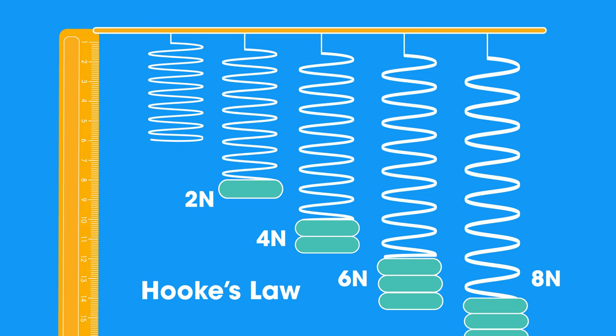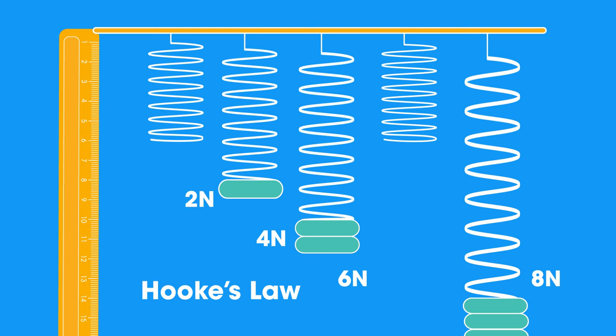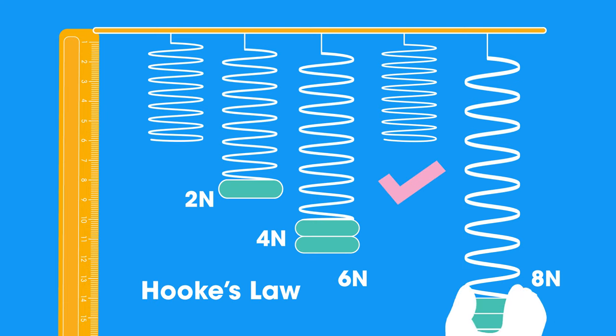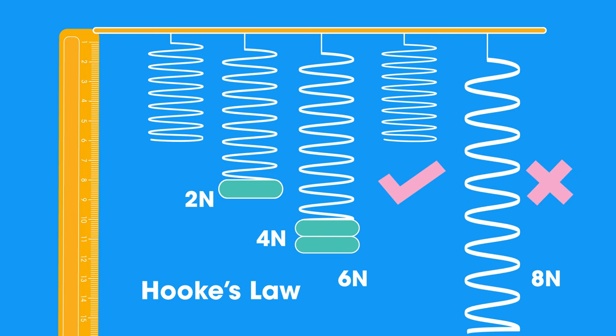Hooke's law states the extension is directly proportional to the force applied, provided that the elastic limit is not exceeded. At the elastic limit, the spring becomes overstretched and won't return to its original state.